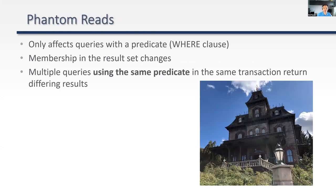Phantom reads affect queries with a predicate or WHERE clause. The idea is that membership in your results can change. If you have multiple queries using the same predicate within the same transaction that return different results, phantom rows have effectively been injected into your result set and are visible in your transaction. Whether this is good or bad depends on the situation.